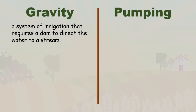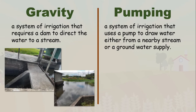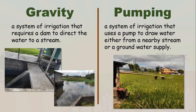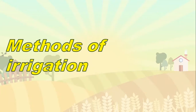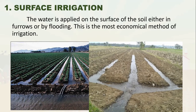The two systems of irrigation are gravity and pumping. Gravity irrigation requires a dam to direct water from a stream, controlling the flow to the field. Pumping irrigation uses a pump to draw water from a nearby stream or groundwater supply. The methods of irrigation include surface irrigation, where water is applied on the soil surface either in furrows or by flooding — this is the most economical method and is most commonly used in the Philippines.